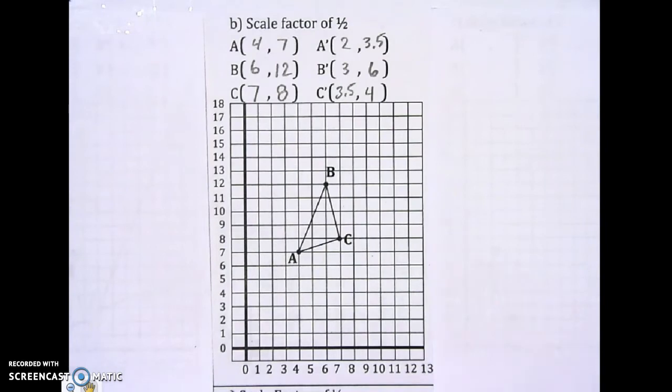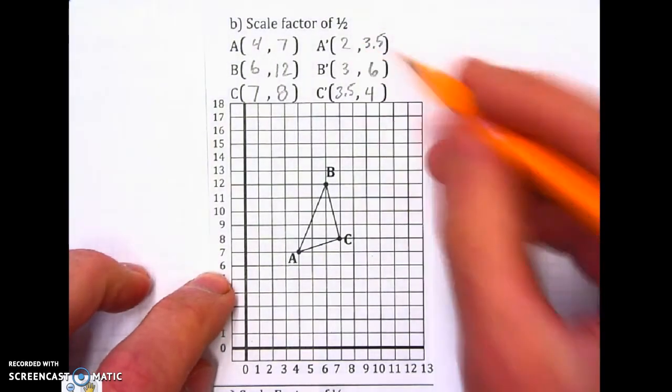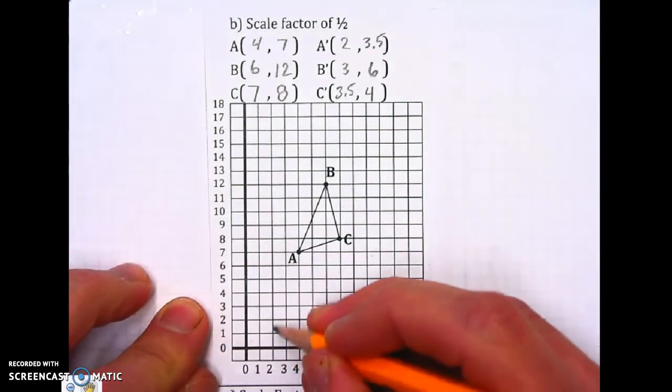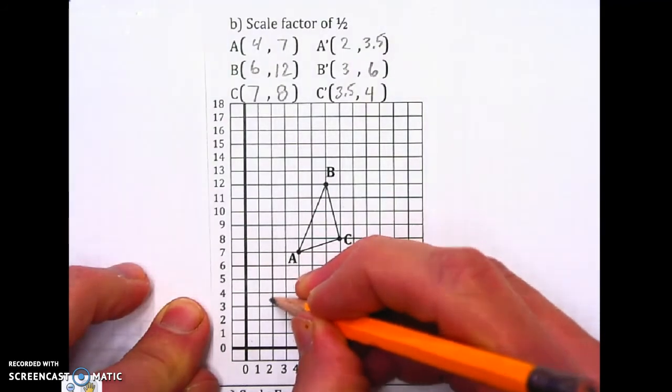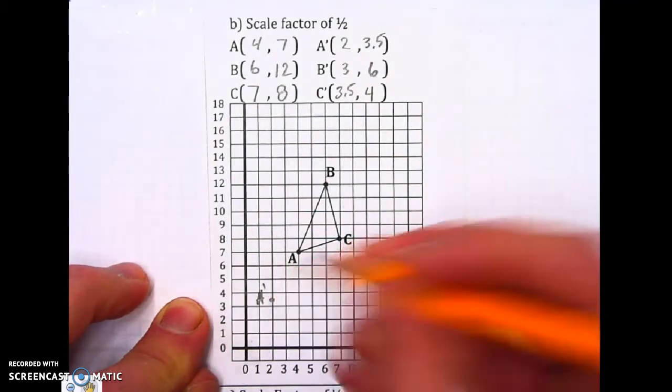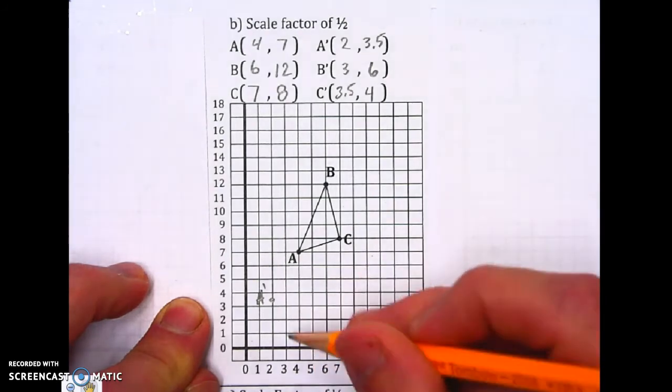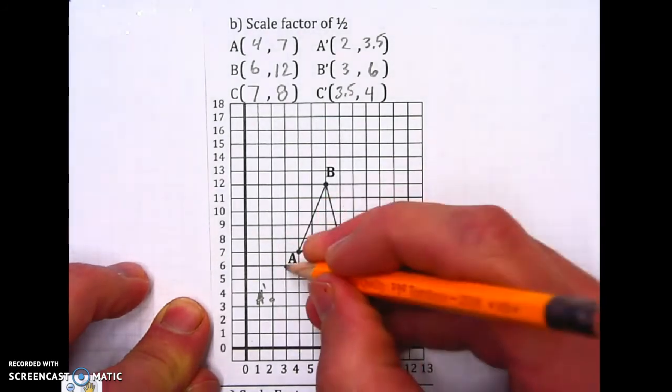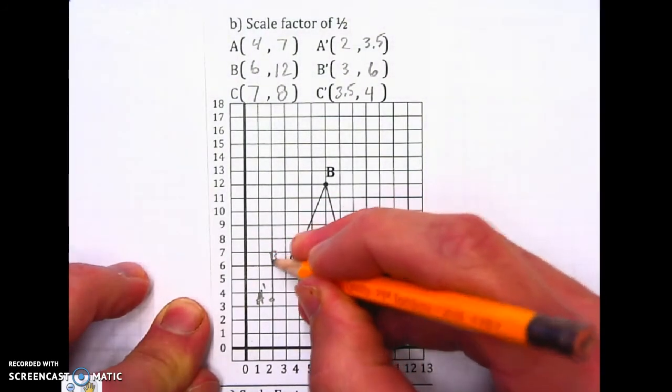I'll plot them on there and then I've got all my coordinates. So here we go with A prime, 2 and then up 3 and a half spaces. There's A prime. And then on B, over 3 and up 6. B prime.